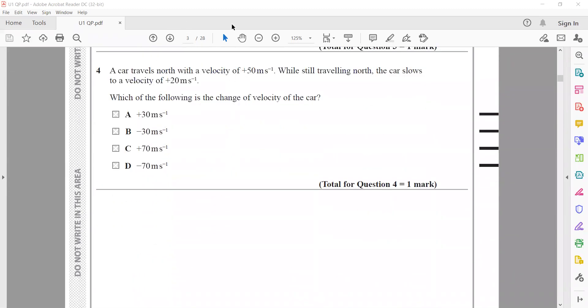A car travels north with a velocity of 50 meters per second and then slows down. It is decelerating but does not change direction, as you can see plus and plus, so it's plus 50 and plus 20. The change in velocity is final minus initial, so 20 minus 50 equals minus 30 meters per second. If there was a change in direction, we would use different signs.